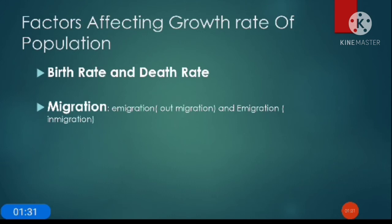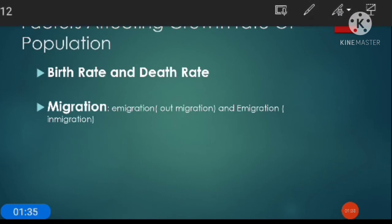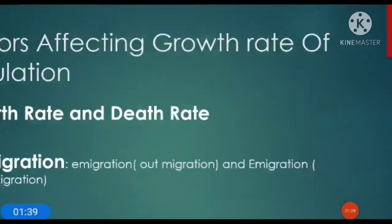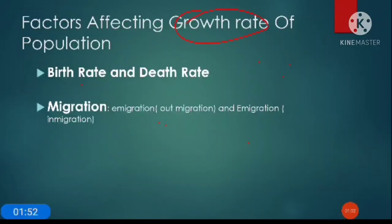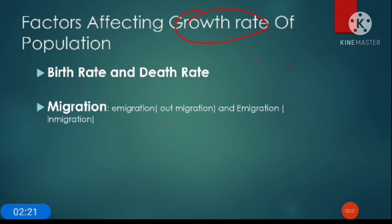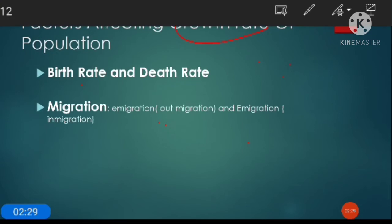Now apart from this, we'll see what are the factors affecting the growth rate of population. But before that, we'll try to understand what growth rate is. Growth rate means the number of persons that is added to — or subtracted from — a population in a year, due to natural increase and net migration.